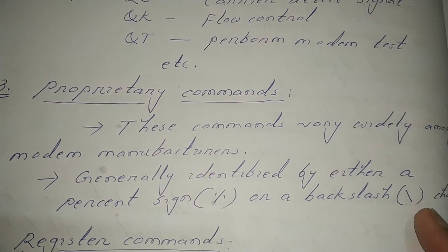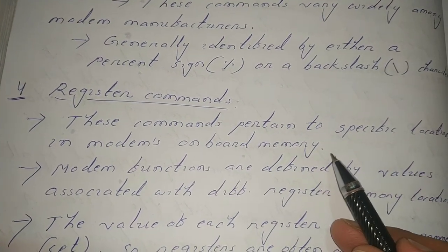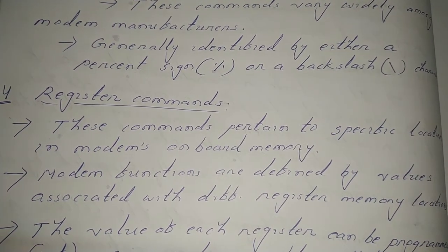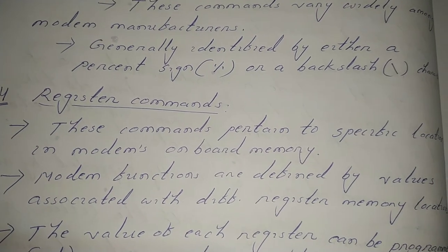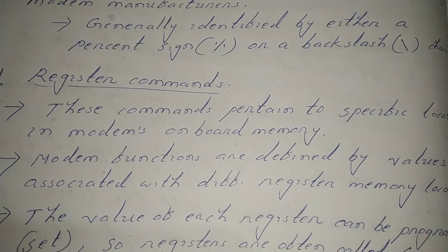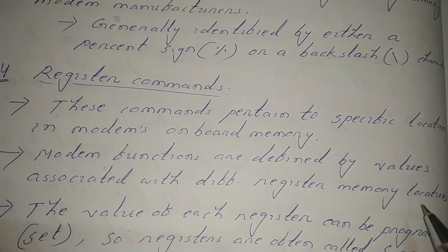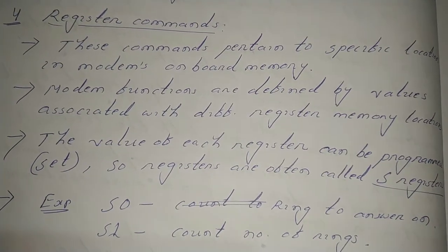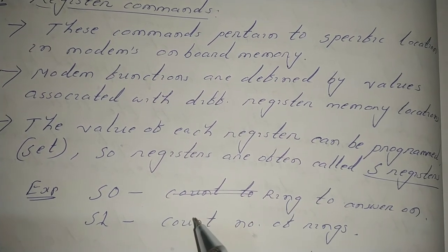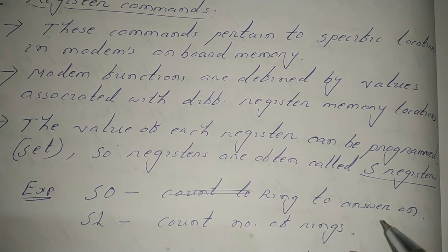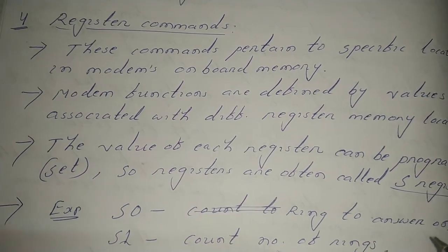The fourth type is register commands. These commands are mapped to specific locations in the modem's onboard memory. Registers are the fastest memory in any computing equipment. Commands that perform register operations or register-related functions are called register commands. Modem functions are defined by values associated with different register memory locations, and those values can be programmed or set. That is why the registers are often called S-registers. For example, S0 means ring to answer on, and S1 means count the number of rings.